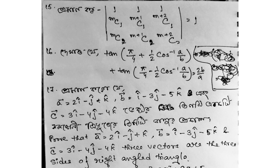Next question: Prove that vector a equals 2i cap minus j cap plus k cap, vector b equals i cap minus 3j cap minus 5k cap, and vector c equals 3i cap minus 4j cap minus 4k cap form a right-angled triangle. These three vectors make a right-angled triangle.